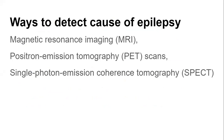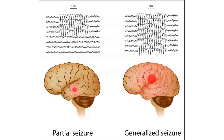Ways to detect epilepsy include MRI scan, PET scan, and SPECT scan. MRI stands for Magnetic Resonance Imaging. PET stands for Positron Emission Tomography — tomography means that certain rays penetrate and produce a result. SPECT stands for Single Photon Emission Coherence Tomography.